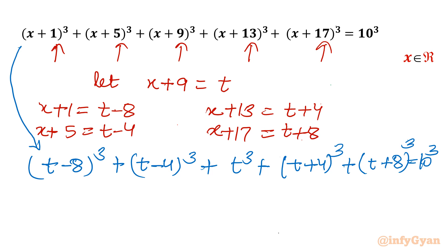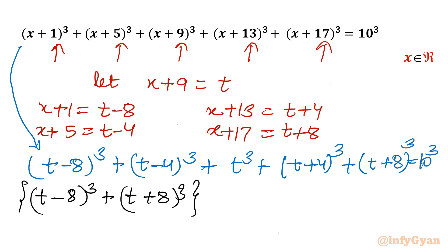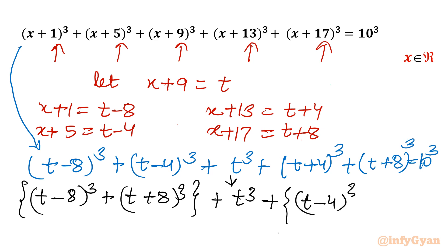Now I will club the first and last terms, and the second and second-last terms. So I will write: {(t minus 8)³ + (t plus 8)³} plus t cube (the central term) plus {(t minus 4)³ + (t plus 4)³} equal to 1000.